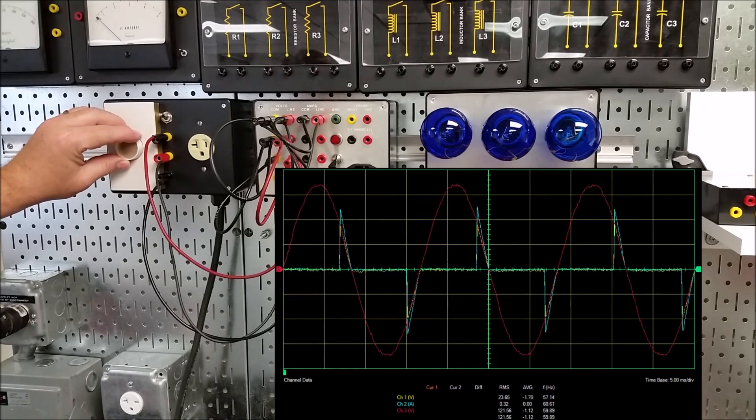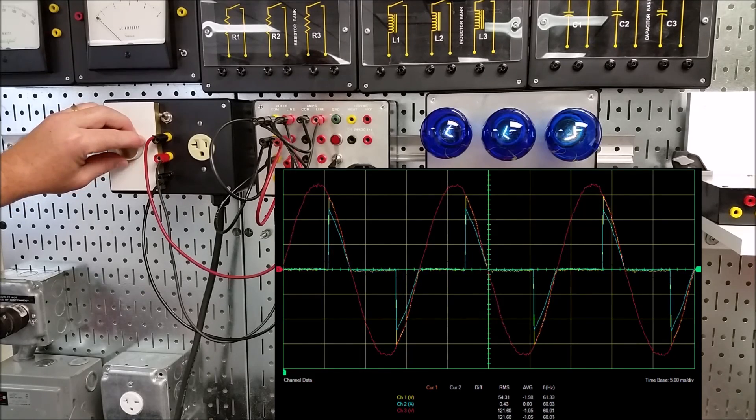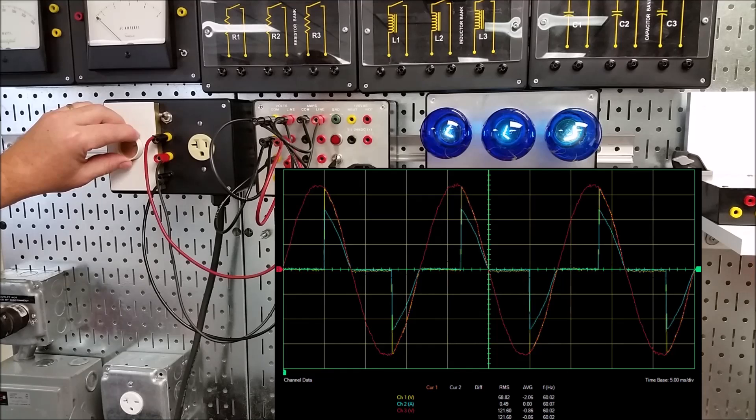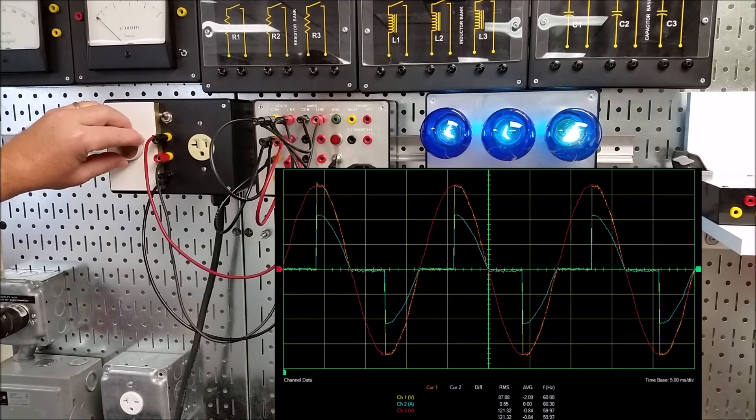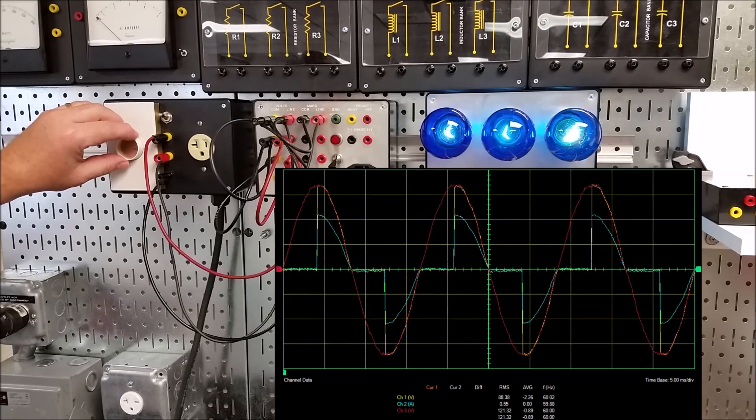So as we increase the dimmer, more and more of that sine wave is being let through. You can see the voltage waveform. Now we're about halfway, following the red one which is the input side. Yellow is the output, and then the current follows it as well.